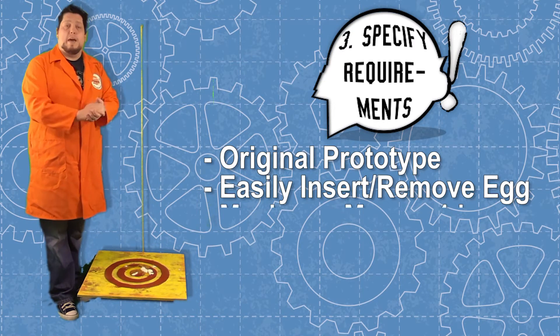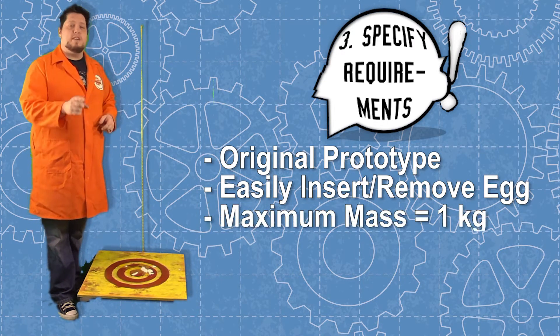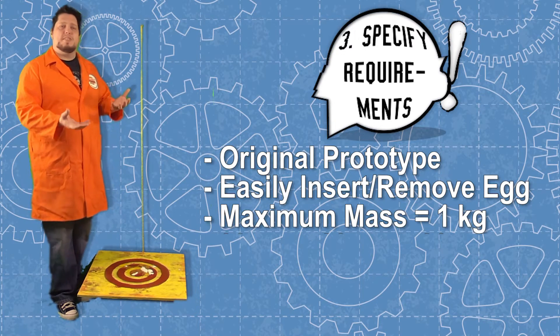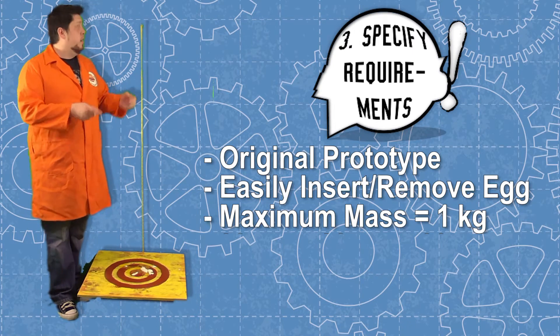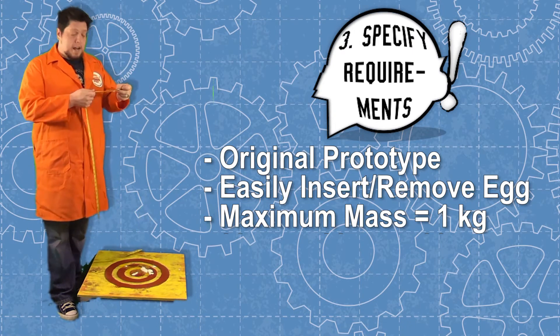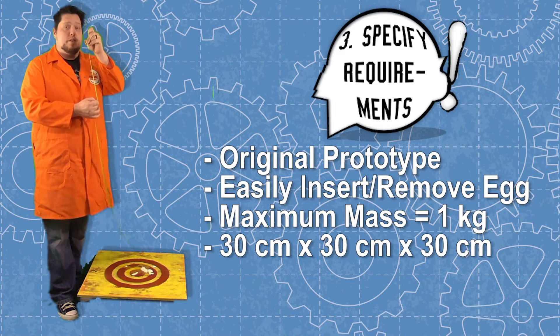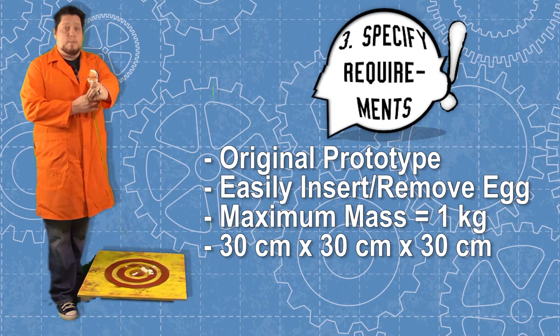Your prototype has a maximum mass of 1 kilogram. That includes the mass of the egg, which is about 0.06 kilograms. The dimensions of your prototype must be within 30 centimeters by 30 centimeters by 30 centimeters.